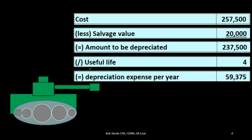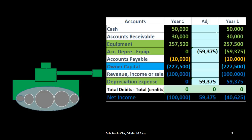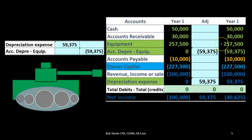So each year we're going to depreciate $59,375, getting us to a total depreciation of $237,500, which will leave us with $20,000 — the salvage value that we'll then sell it for or scrap it for. If we were to post this first journal entry, we would then have on the books the $257,500 cost less accumulated depreciation of $59,375, telling our reader three things: what the cost of the asset was, what the accumulated depreciation is, and how to derive the book value by subtracting accumulated depreciation from cost.